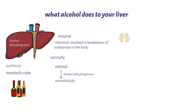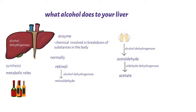But once we consume alcohol, alcohol dehydrogenase breaks it down through an oxidation process to form acetaldehyde. This acetaldehyde formed is then broken down by aldehyde dehydrogenase to form acetate, which enters other metabolic pathways in the body.